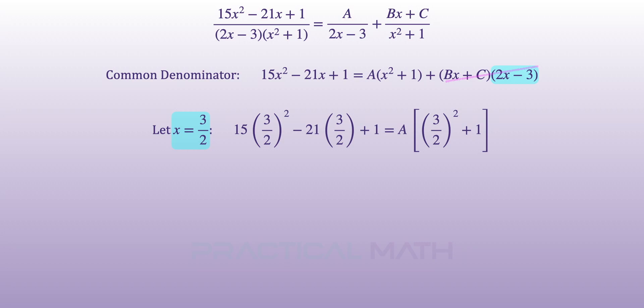Setting 2x minus 3 to be equal to 0, such that we can cancel away the last term, will give us x to be 3 over 2. Let's replace x to be 3 over 2 throughout the left and right sides of this equation. Solving for A will give a result of 1.